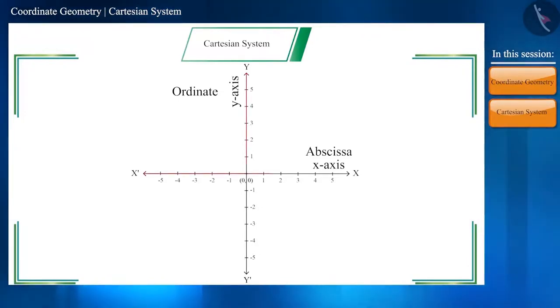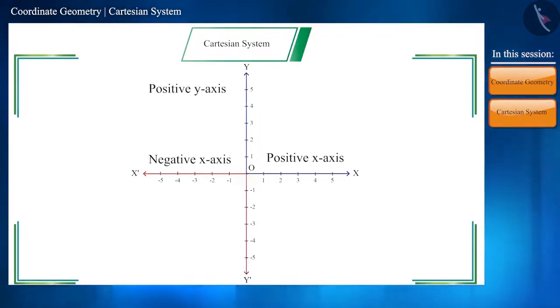The two axes intersect each other at the point zero, which is called the origin. The X-axis to the right of zero is called the positive X-axis and the X-axis to the left of zero is called negative X-axis. Similarly, the upper part of zero is positive Y-axis and the lower one is negative Y-axis.